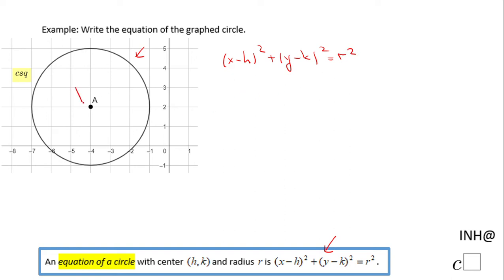h and k are the coordinates of the center. So in our case, the center is this point A, which has the coordinates negative 4 and 2. So that means h is negative 4 and k is positive 2.